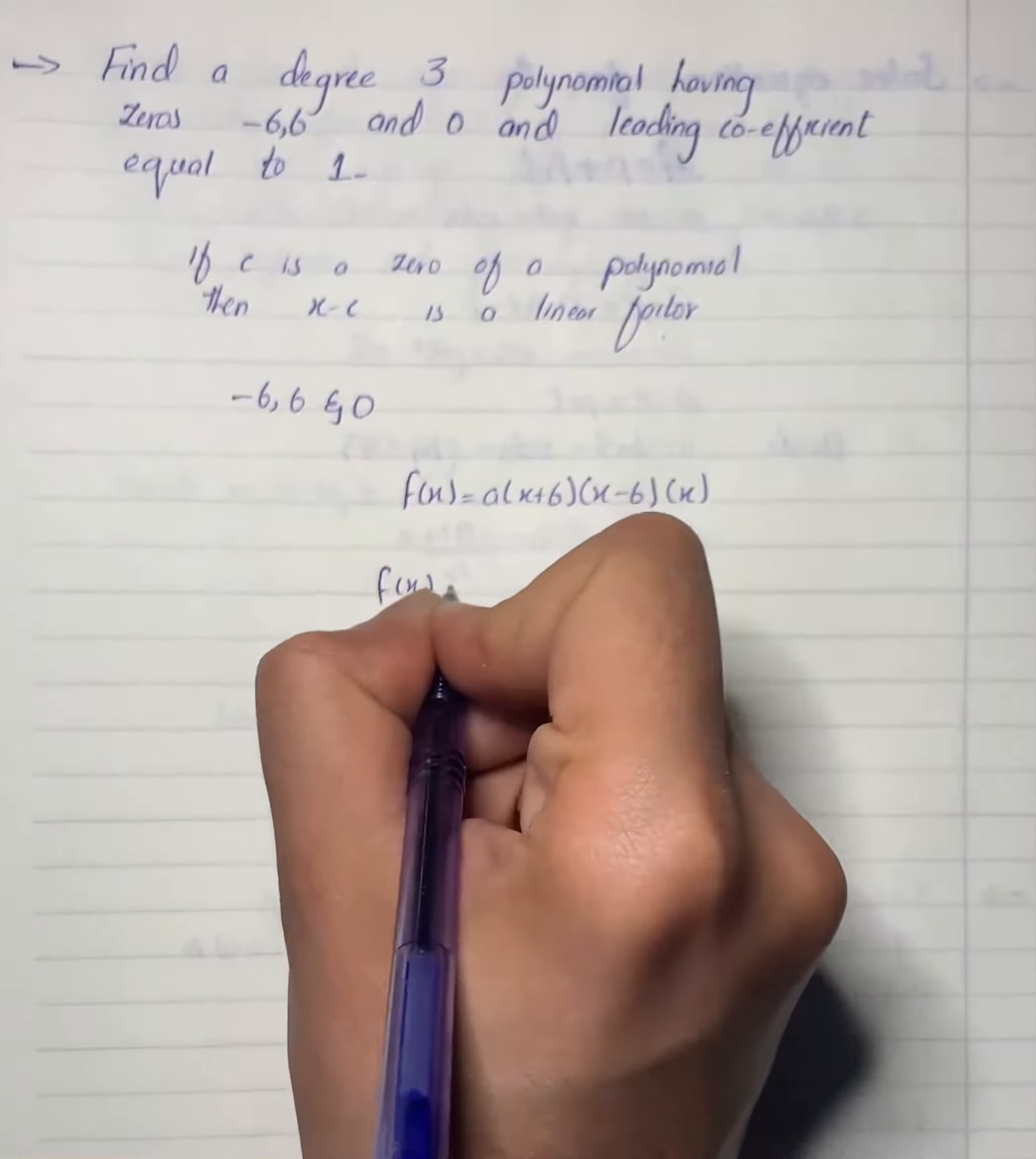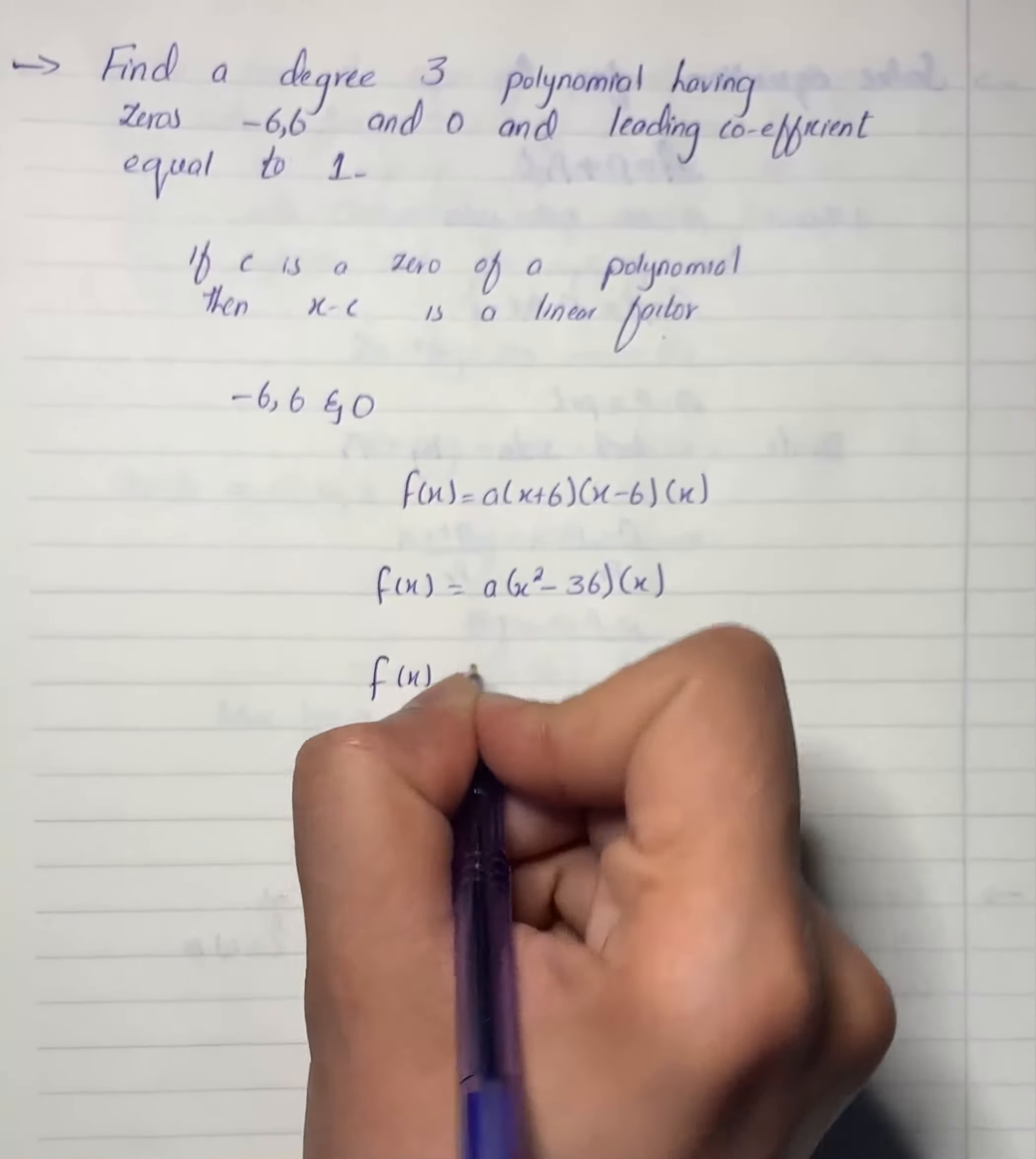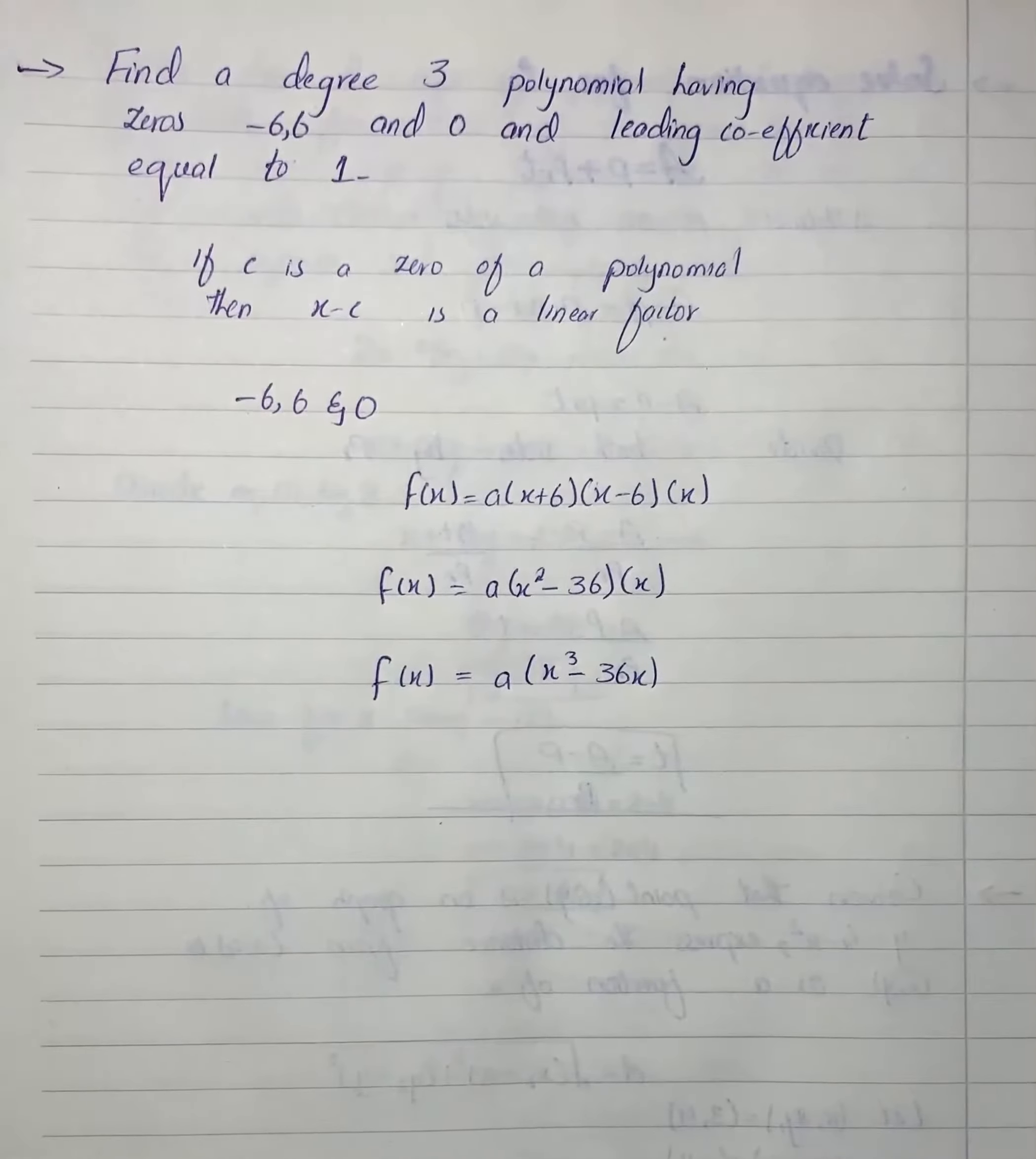It will give us a(x² - 36)(x). On further simplification, it will give us a(x³ - 36x). As the leading coefficient is equal to 1,